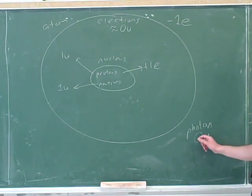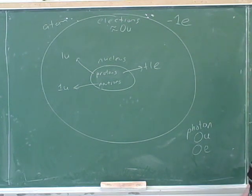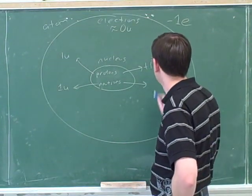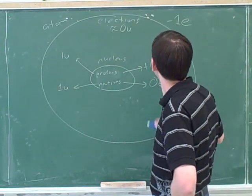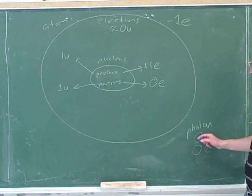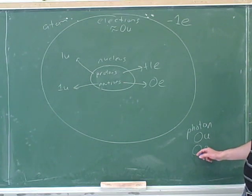And while we're at it, what's the charge on a photon? There's no charge. Yeah, photons are uncharged. While we're at it, what's the charge on a neutron? There's no charge.